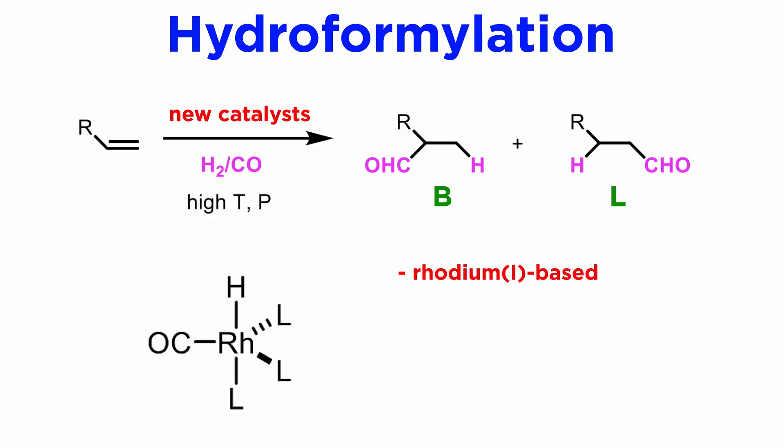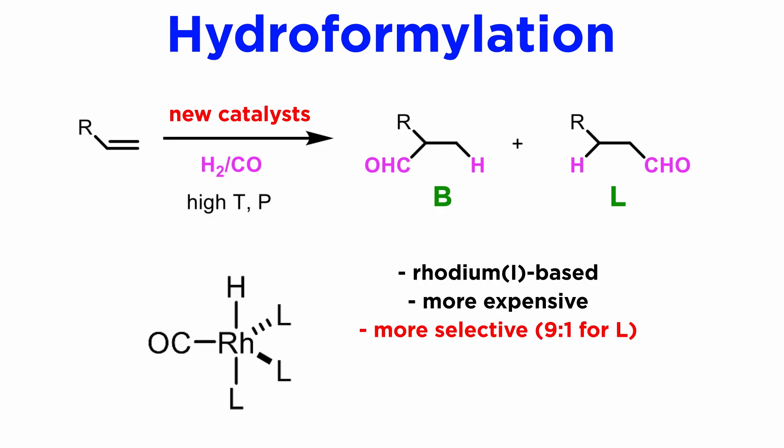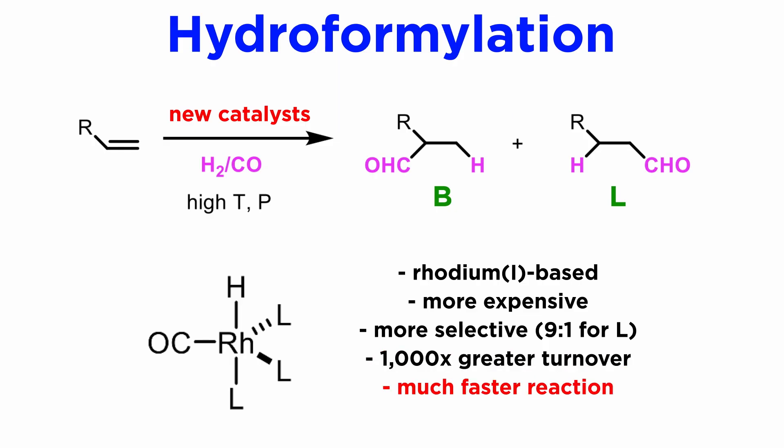In the late 1960s, better catalysts were developed based on rhodium(I). Rhodium is a much more expensive metal, but its catalysts are much more selective, with over 90% linear selectivity. They are more durable, with up to 1,000 times the number of turnovers possible than with cobalt, and much faster, so the temperatures used can be milder — under 120 degrees Celsius — and the pressures required are easier to achieve, around 15 to 25 atmospheres.